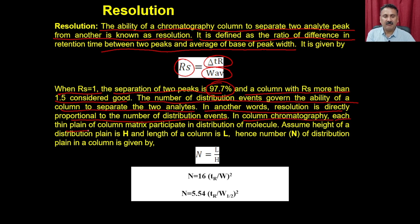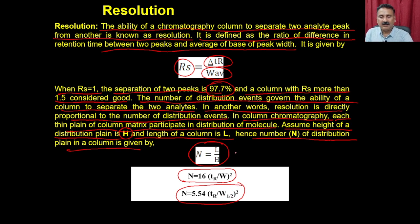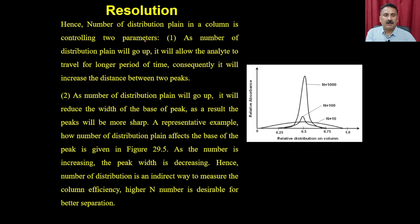In column chromatography, each thin plane of column matrix participates in the distribution of molecules. If the height of a distribution plane is h and the column length is L, then the number of distribution planes N = L/h. Mathematically, N = 16(tR/w)² or equivalently N = 5.54(tR/w½)², which defines the resolution of a column — a higher N indicates better resolution.